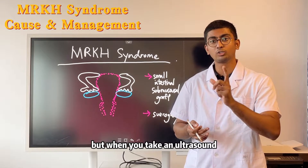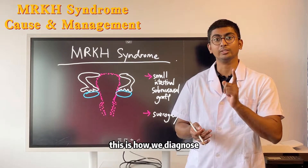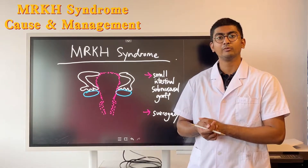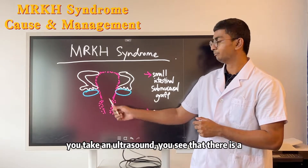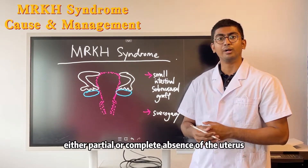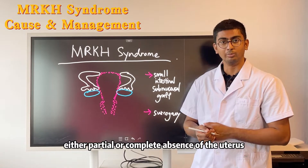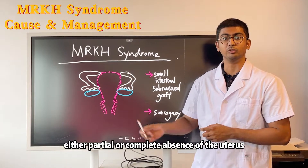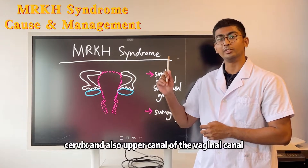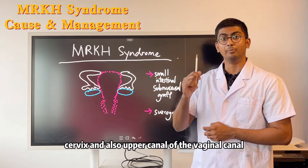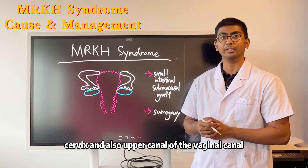When you take an ultrasound — and this is how we diagnose — you will see either a partial or complete absence of the uterus, cervix, and also the upper parts of the vaginal canal.